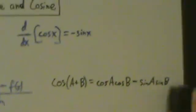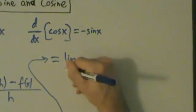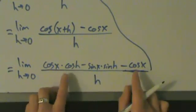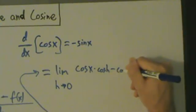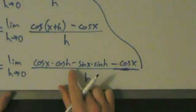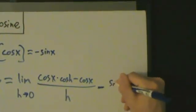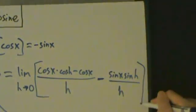Just like we did before, let's simplify. We have cosine x cosine h minus sine x sine h minus cosine x. The first and third terms both have cosine x, so let's combine them. We'll do cosine x times cosine h minus cosine x over h, and then minus sine x times sine h over h. We're taking the limit of all of this, so we keep the brackets.